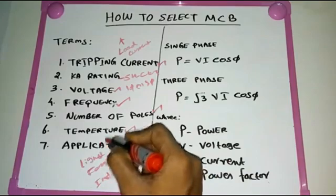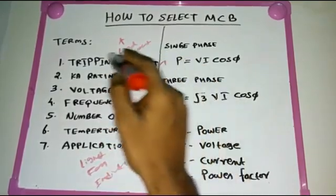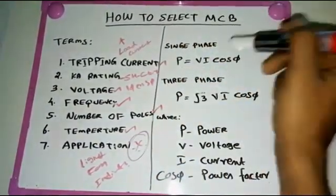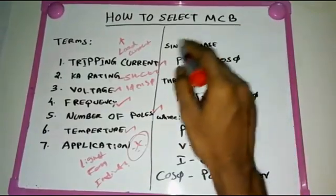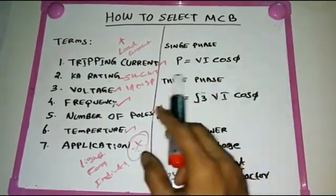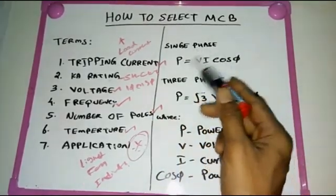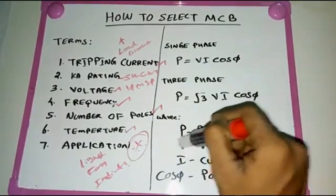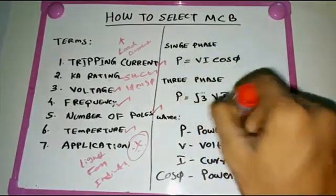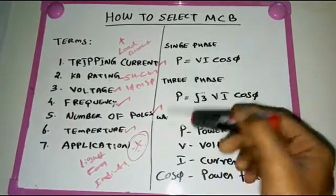So there are seven terms to consider when selecting an MCB. After identifying those, we use the power formula. For single phase: P = V × I × cos φ. For three phase: P = √3 × V × I × cos φ. Here P is power, V is voltage, I is current, and cos φ is the power factor.